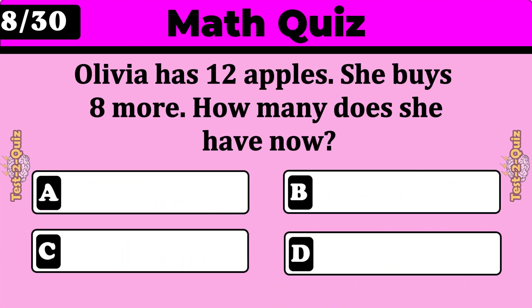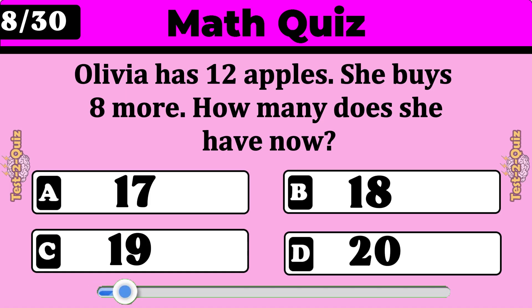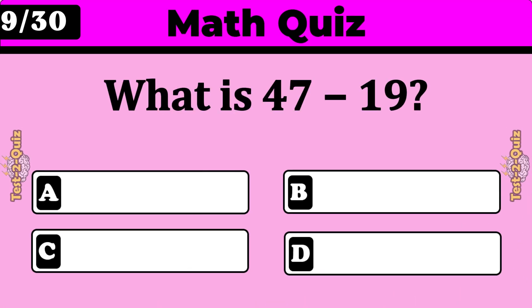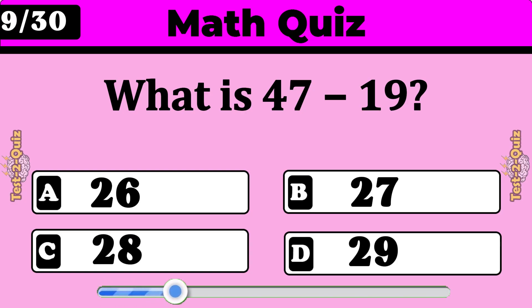Olivia has 12 apples. She buys 8 more. How many does she have now? 20. What is 47 minus 19? 28.